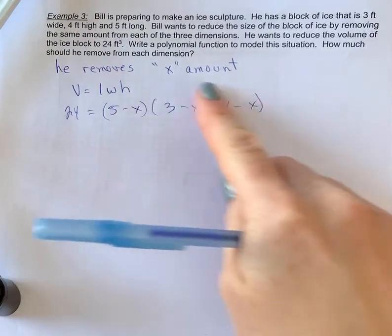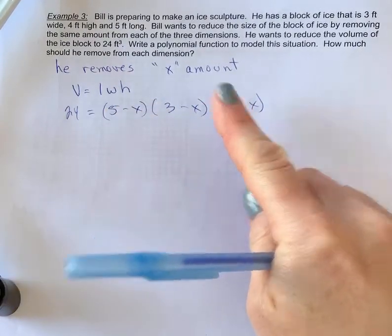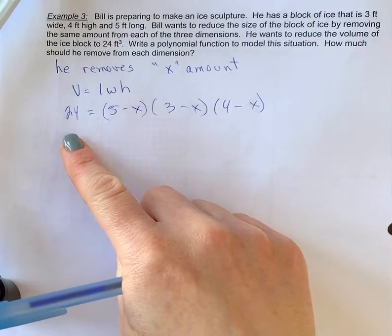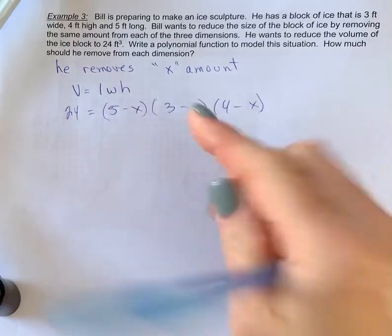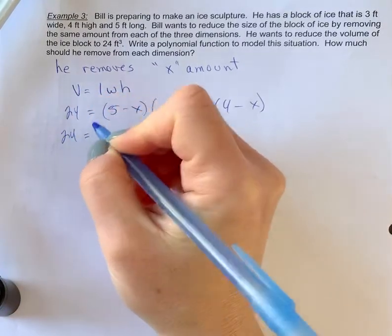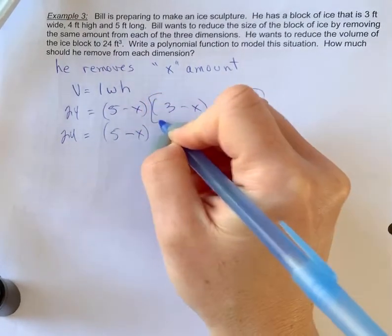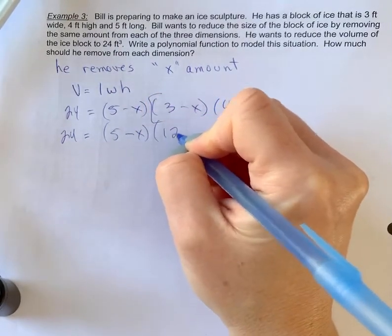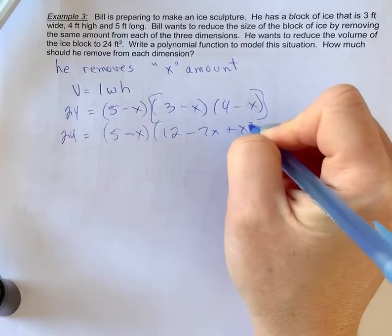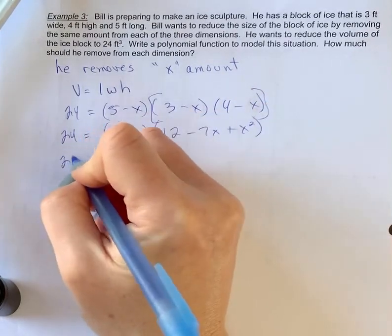To solve for x, you're going to multiply this through and isolate, or sorry, set the equation to zero. So to do this, I prefer to FOIL with that term first, and then we'll multiply this through. So when you do that, you're going to get 12 minus 7x plus x squared.